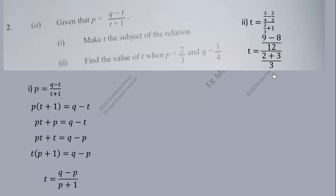So let's simplify: 9 minus 8 is 1 over 12, then 2 plus 3 is 5 over 3. Now we are going to rewrite so that this becomes the original division sign.